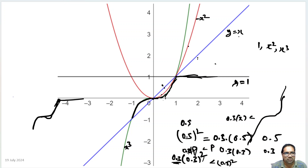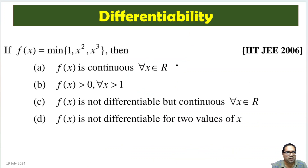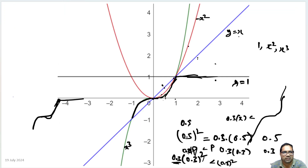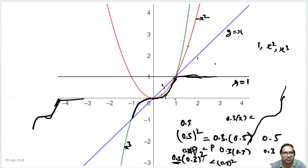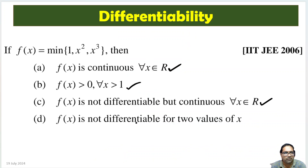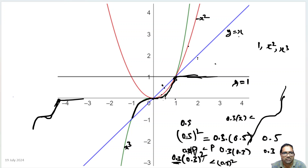At x = 1, the function is not differentiable. Rest of all places it is differentiable, and it is continuous always. F(x) is always continuous — this is true. F(x) is greater than 0 for all x greater than 1 — yes, for x greater than 1 it equals 1, which is greater than 0. F(x) is not differentiable but continuous at x = 1 — correct, it is not differentiable at that one point only, not two values of x.